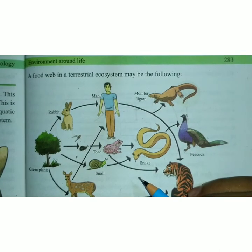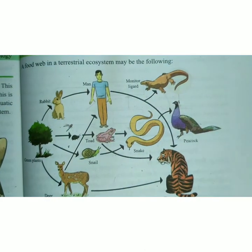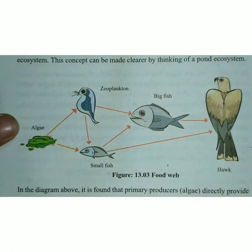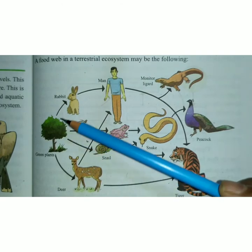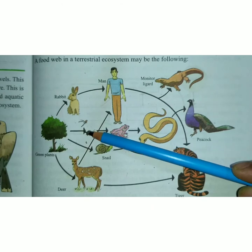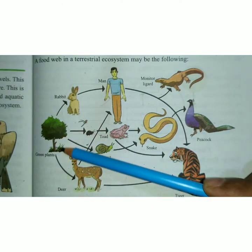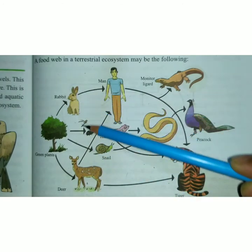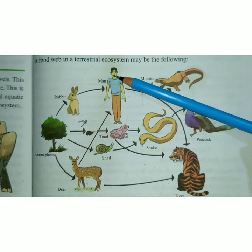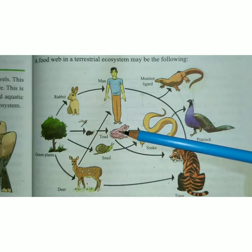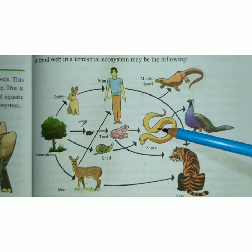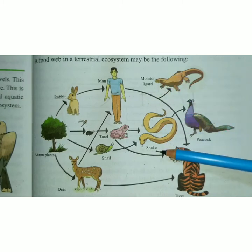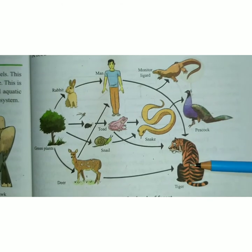A food web in a terrestrial ecosystem may look like the following. In a terrestrial ecosystem, the producer is green plants. First-level consumers include rabbit, insect, snail, and deer. Second-level consumers include human beings and toad. Third-level consumers are lizard and snake. Peacock and tiger are the top-level consumers.